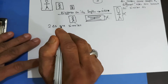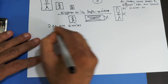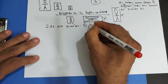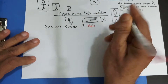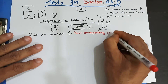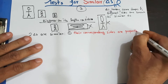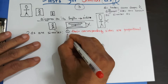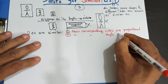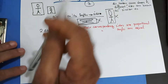Two triangles are similar if their corresponding angles are equal, or if their corresponding sides are proportional. So: one — their corresponding sides are proportional; or two — their corresponding angles are equal. There is one more test I'm coming to in a second.